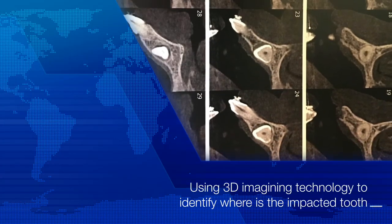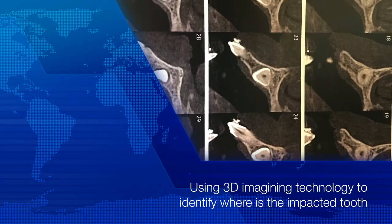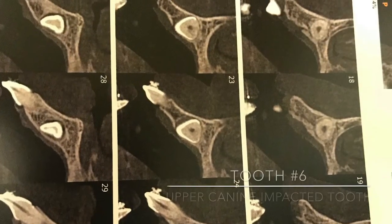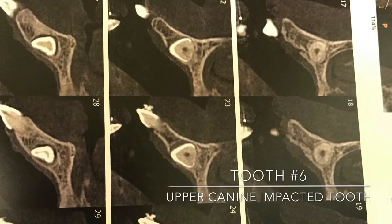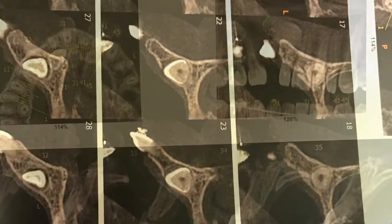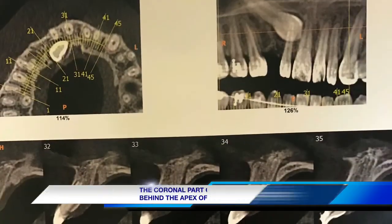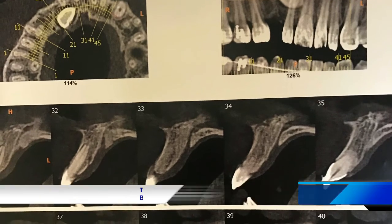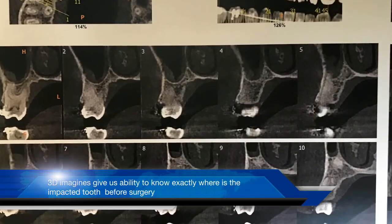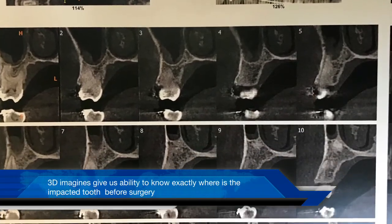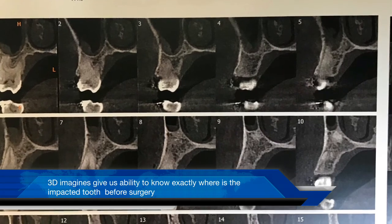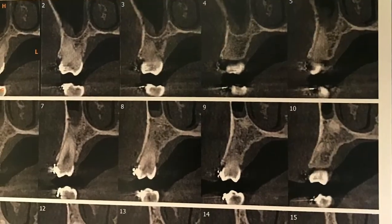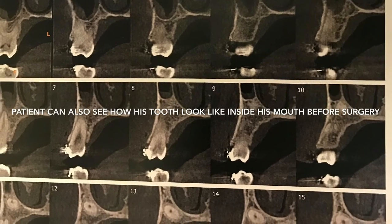Hello, this video will show you a summary of how a dentist can use 3D imaging to locate your impacted canine before the surgery and discuss how he can expose the area for orthodontic purposes. In this particular case, we are talking about an upper right impacted canine.